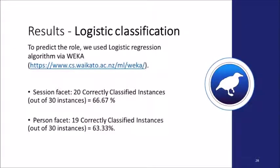We ran logistic regression classification for the session facet and the person facet, using variables: Euclidean distance, gap of medians, slope of gaps, and an additional binary variable that is true whenever the gap of medians is higher than the average over all medians of the relevant facet. The results show approximately 67% correct for the session facet and 63% correct for the person facet.